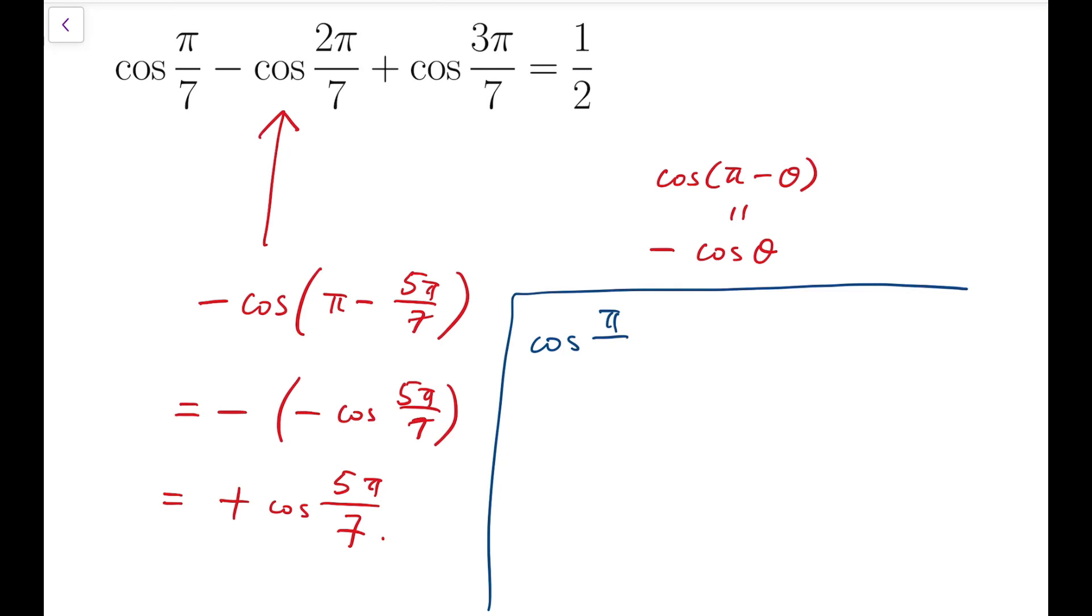So now the equality I have to prove becomes cosine π over 7 plus cosine 3π over 7 plus cosine 5π over 7 equals a half. And notice that the left-hand side is still quite good looking because the terms inside cosine are just odd numbers times π over 7, so they still form a pretty good pattern.